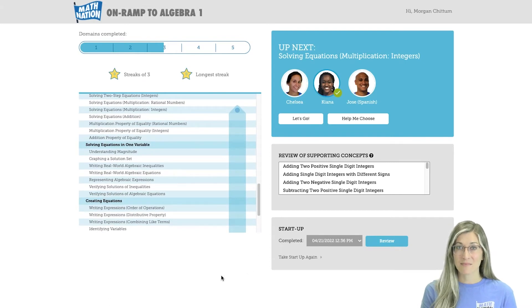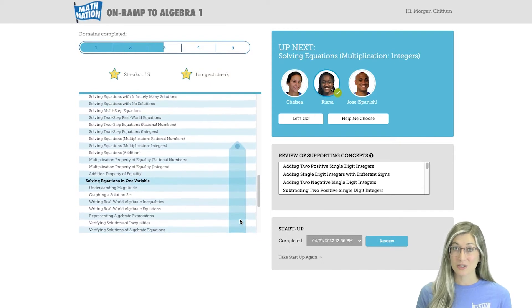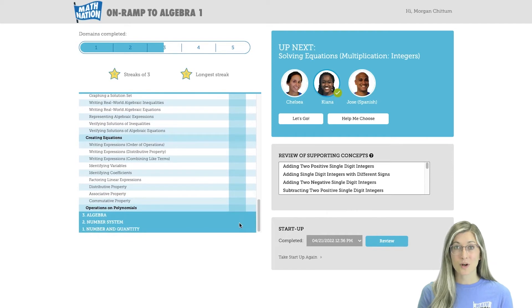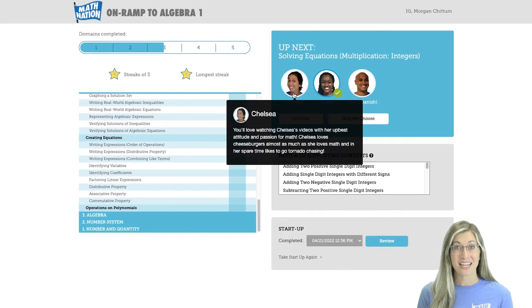After the start-up, the on-ramp tool builds an individualized learning pathway for each student based on the topics they still need to master. In on-ramp, students will work with a virtual teacher, or study expert as we like to call them, of their choosing.